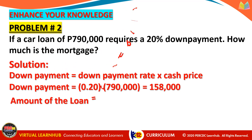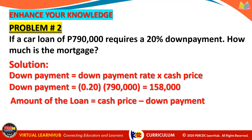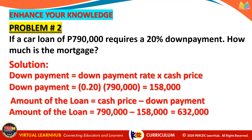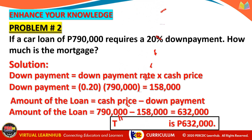To solve for the mortgage, we use the formula: amount of loan equals cash price minus the down payment. The amount of loan equals P790,000 minus P158,000. So the amount of the loan is P632,000 pesos. Therefore, the mortgage is also P632,000 pesos.